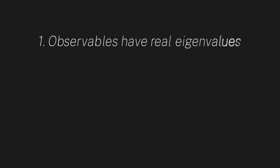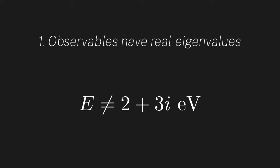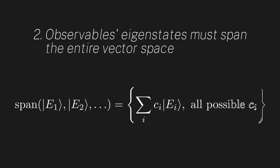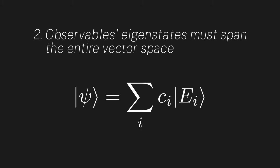Now, with just this, we can already use our physicists' intuition to derive the mathematical properties that physical observables should have. First, observables need to have real eigenvalues. Intuitively, it doesn't make sense for a particle to have 2+3i energy. Physical quantities are inherently real. Next, observables' eigenstates must span the entire vector space. Remember that the span of a set of vectors is the subspace formed by all possible linear combinations of those vectors. So this property says that linear combinations of an observable's eigenstates cover the entire quantum vector space. Another way to word this is that any quantum state can be written as a linear combination of eigenstates.